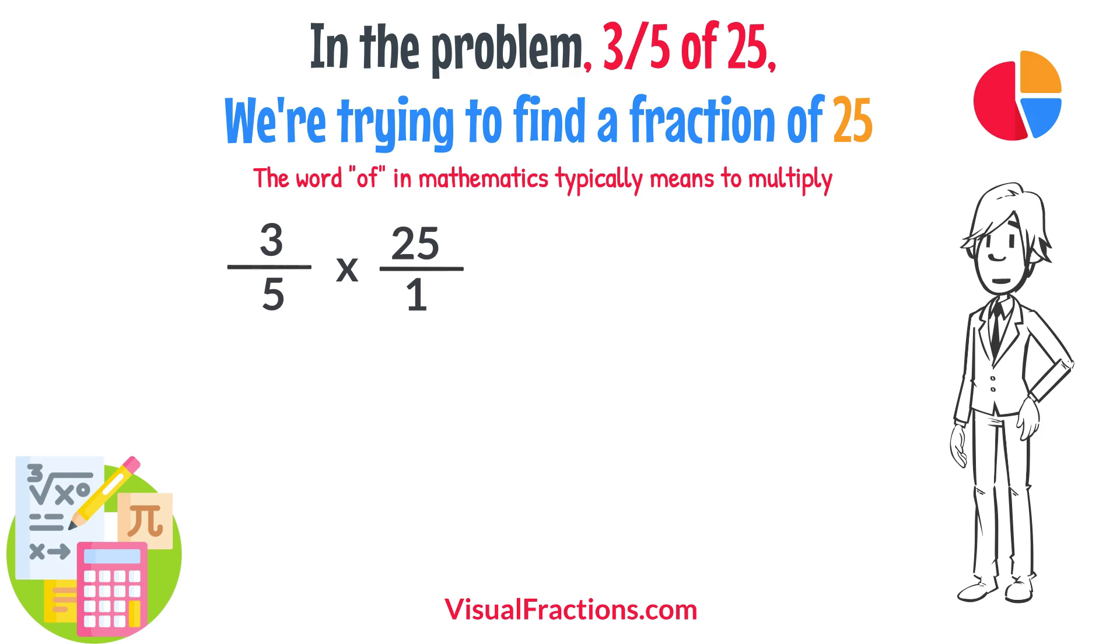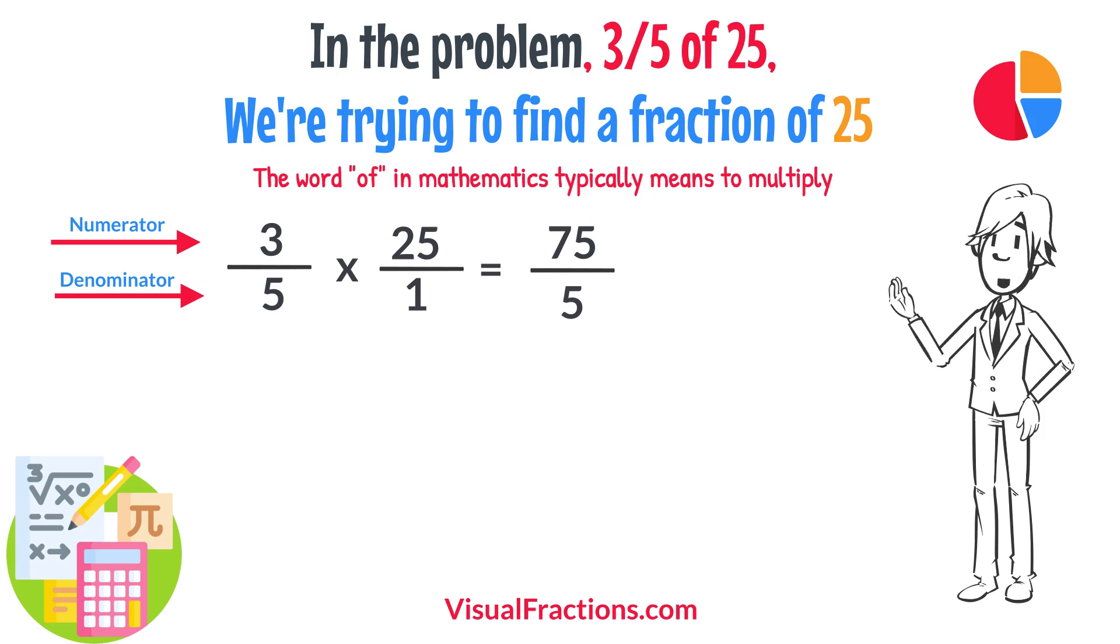Now, we proceed to multiply across. First, multiply the numerators: 3 times 25 equals 75. Next, multiply the denominators: 1 times 5 equals 5. We now have a new fraction, 75 fifths.